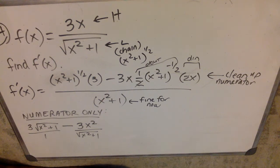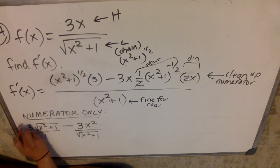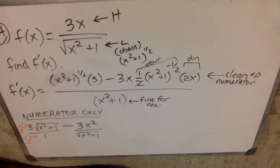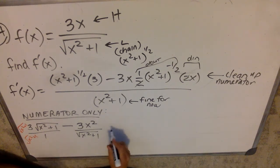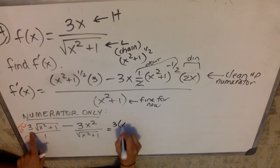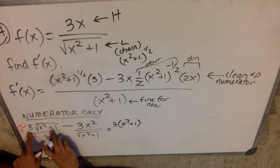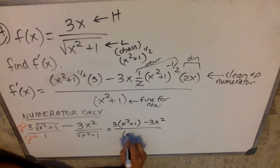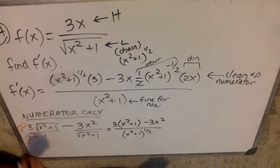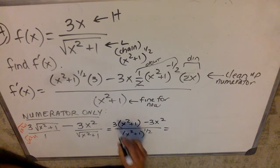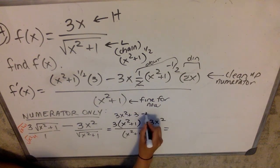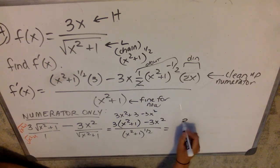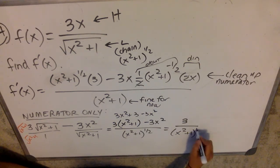To get a common denominator in the numerator, I'm going to multiply this fraction by √(x²+1) over √(x²+1). My numerator only ends up with 3 times (x²+1) — because root times root gives x²+1 — minus 3x², all over (x²+1) to the one-half. So that numerator simplifies to 3x²+3 minus 3x², which is just 3, over (x²+1)^(1/2).